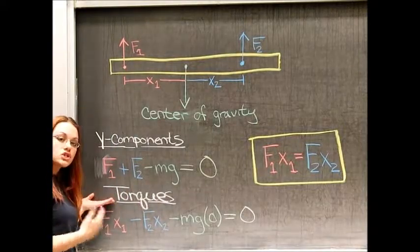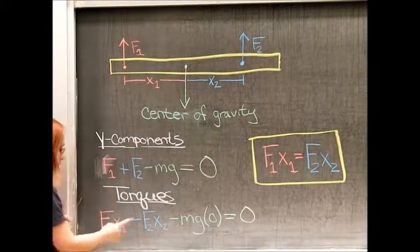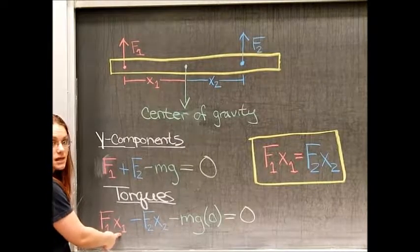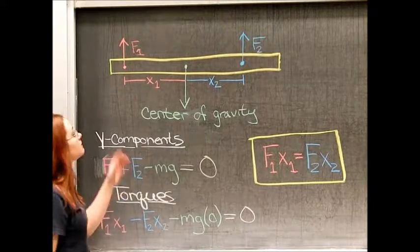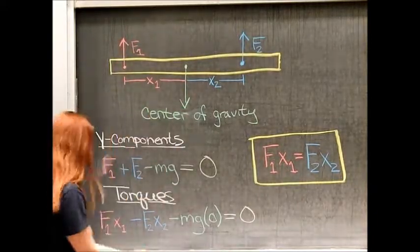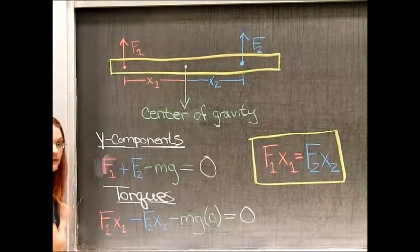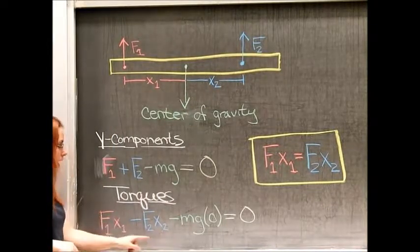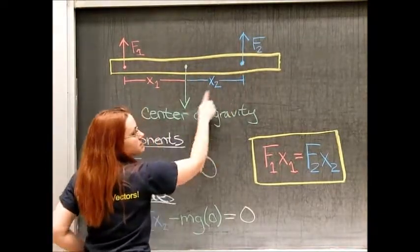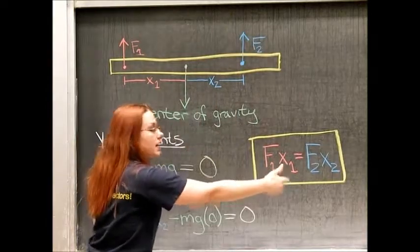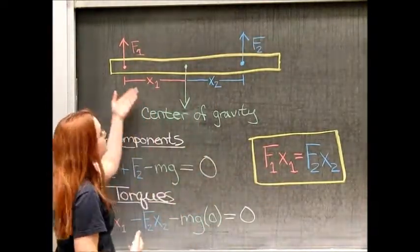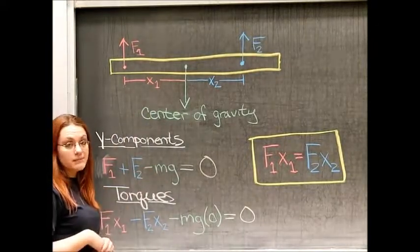If we then go ahead and look at the torques of the system, we know that the force of finger one times the distance away from the center of mass times the sign of the angle between. Well, we know that this is a 90 degree angle, so the sign of the angle is one, so there's our torque applied by finger one. Finger two applies a torque of the force times the distance, but this is now on the opposite side, so we can introduce a negative because it's going to be rotating in the opposite direction as what would happen if force one dominated.